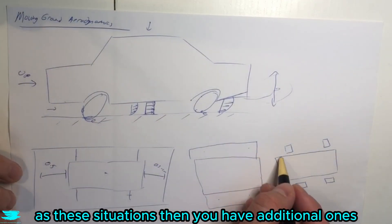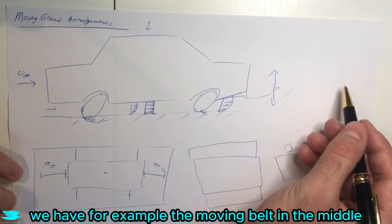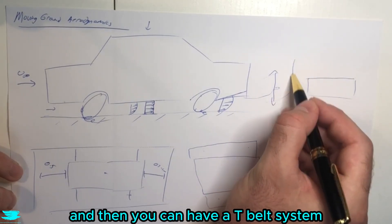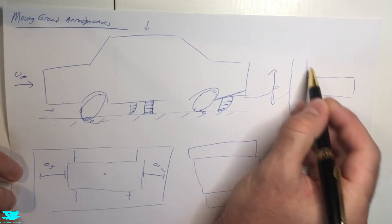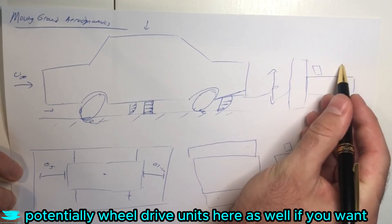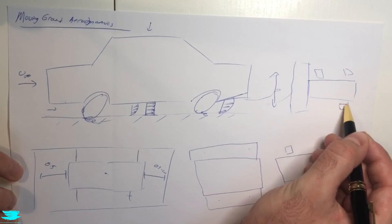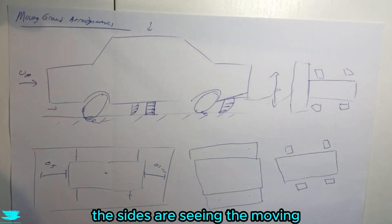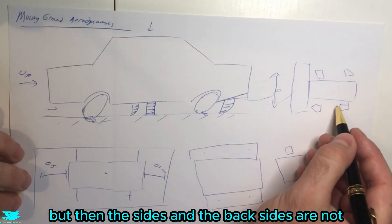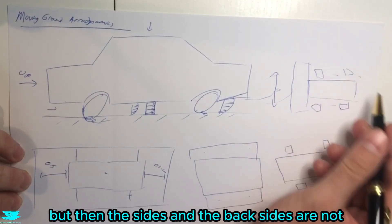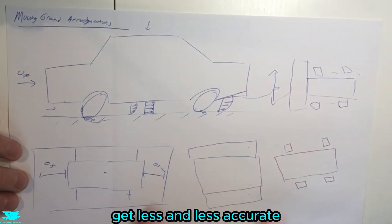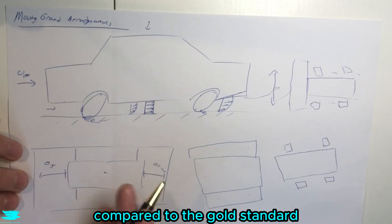Then you have additional ones where you have the moving belt in the middle and a T-belt system. So you have a big one at the front, and then you have potentially wheel drive units here as well if you want. Then at least the front of the car and the sides are seeing the moving ground boundary condition, but then the sides and the back sides are not. As we go along, these get less and less accurate compared to the gold standard.